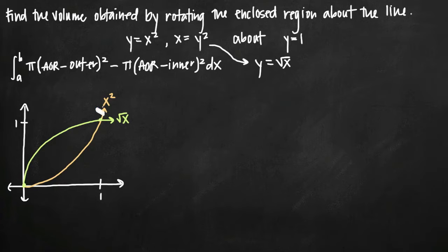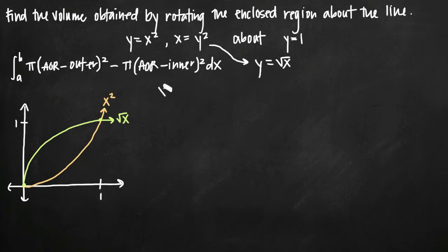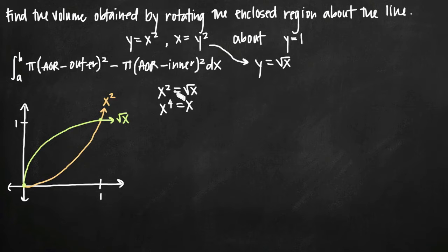If we didn't know what these curves looked like, we could set them equal to each other: x squared equals square root of x. Squaring both sides gives x to the fourth equals x, which is only true when x equals 0 and x equals 1. So the intersection points of these curves are at x equals 0 and x equals 1.